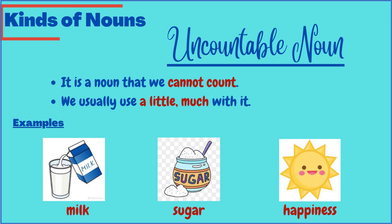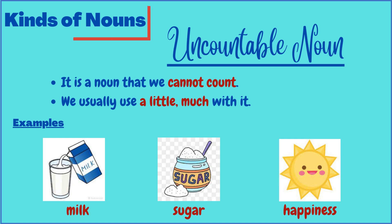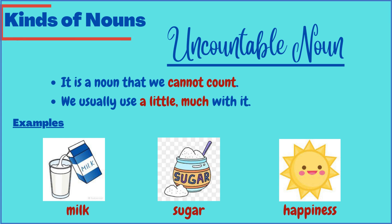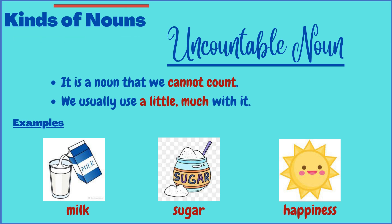The next kind is the uncountable noun. As the name suggests, it is a noun that can't be counted. The quantifiers 'a little' and 'much' can only be used with uncountable nouns and not the countable ones. Examples are milk, sugar, and happiness — none of these can be counted.